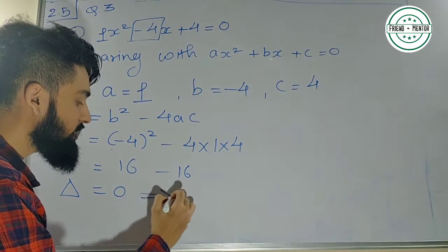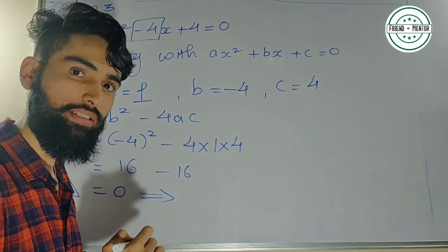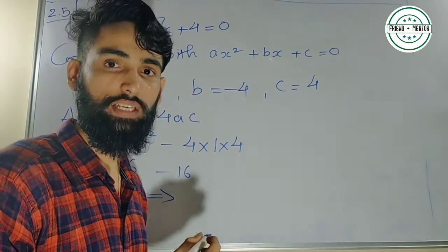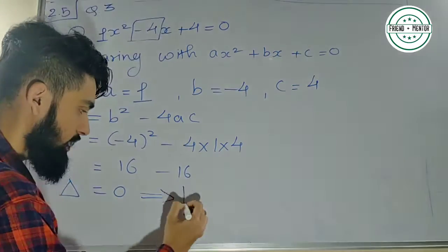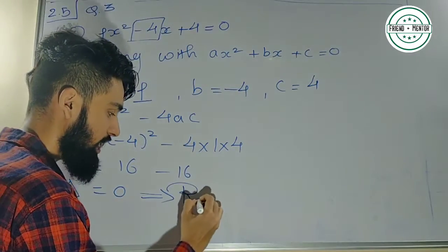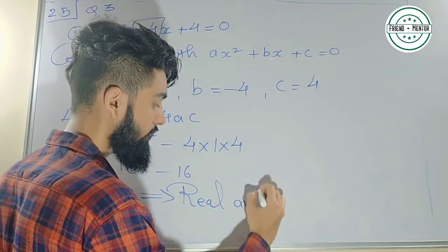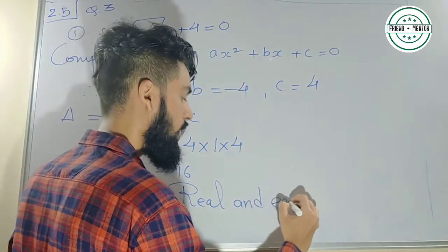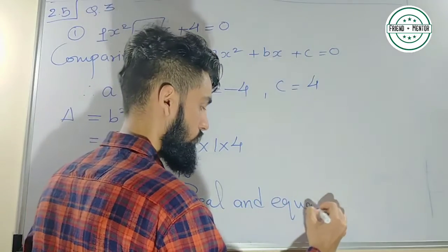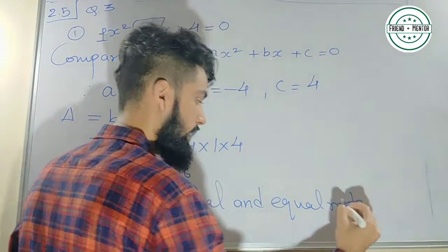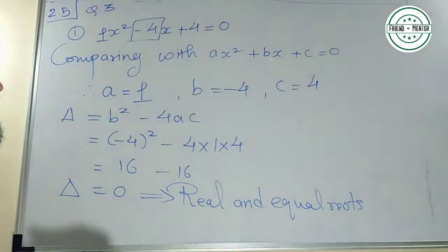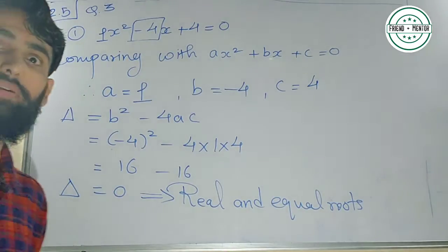Whenever the discriminant is 0, what is the nature? Roots are real and equal. So this was the first one.